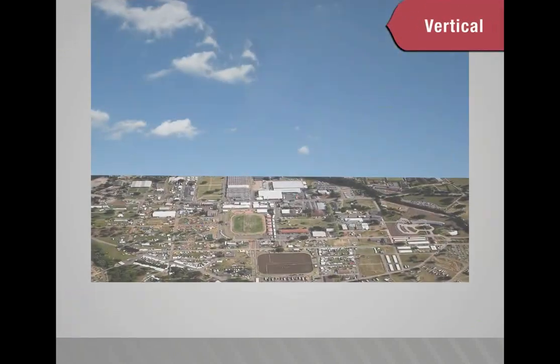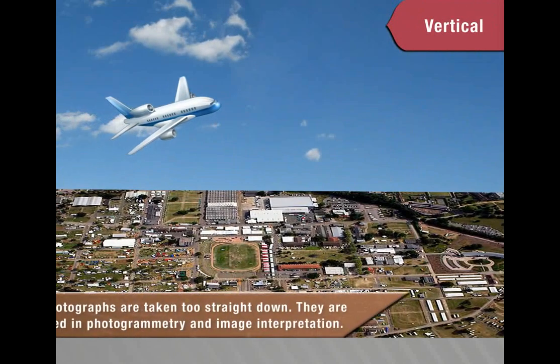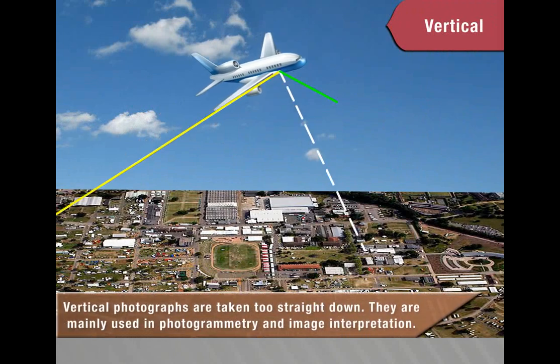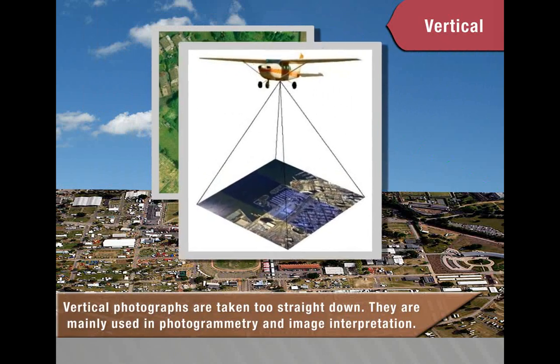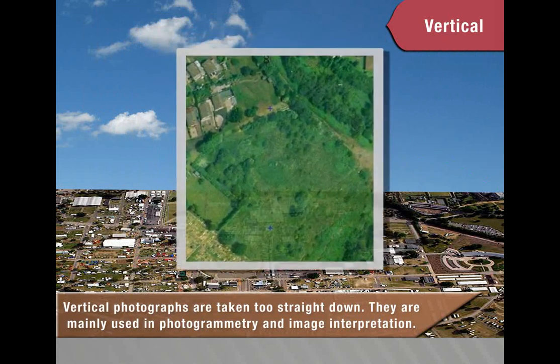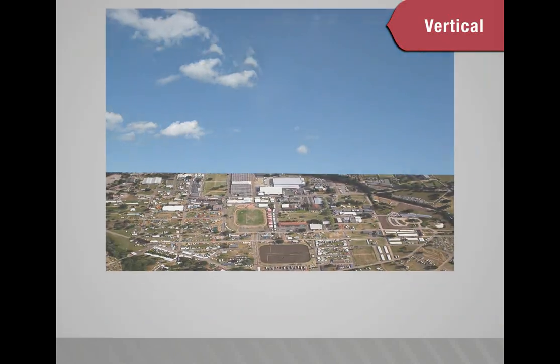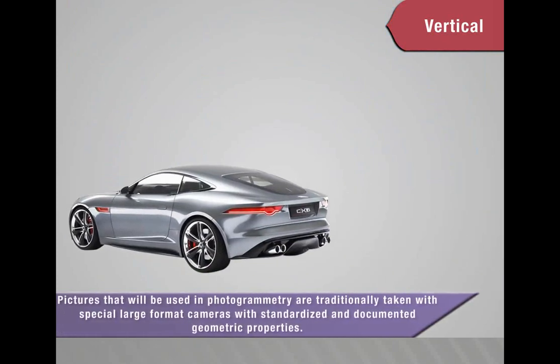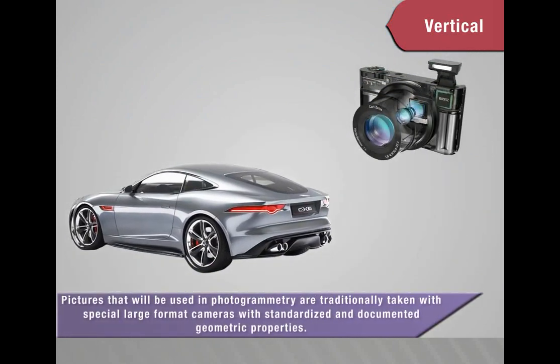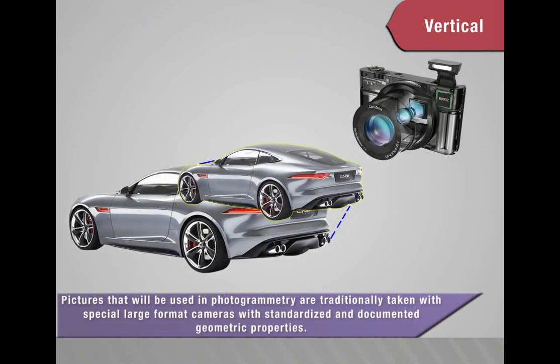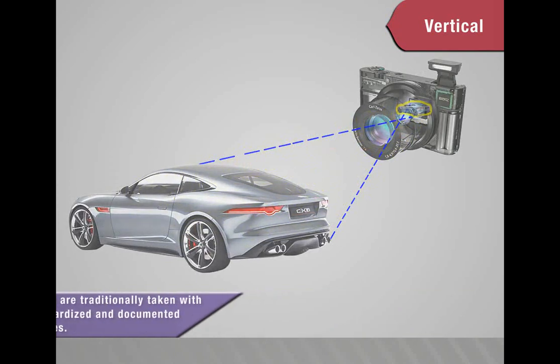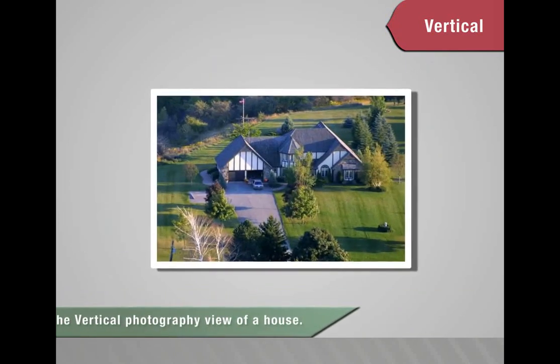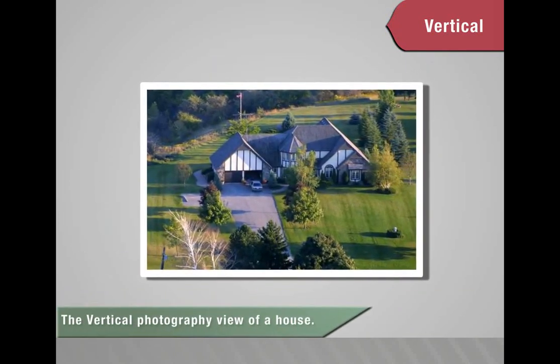Vertical photographs are taken straight down. They are mainly used in photogrammetry and image interpretation. Pictures used in photogrammetry are traditionally taken with special large-format cameras with standardized and documented geometric properties. The vertical photography view of a house.